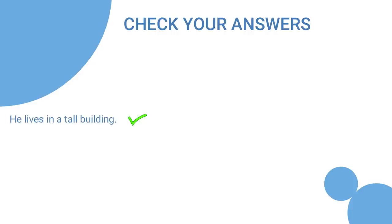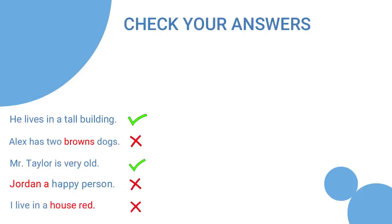Check your answers. He lives in a tall building. OK. Number two is not OK. It should be 'Alex has two brown dogs.' Three, OK. Four, not OK. Jordan is a happy person. Five, not OK. I live in a red house.